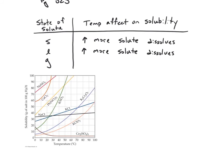Looking at a graph of solids dissolved versus temperature: as temperature increases along the horizontal axis, solubility in grams of salt per 100 grams of water increases for almost all of them. Some show exponential growth, others are more linear. Cesium sulfate is an unusual exception — its solubility actually decreases as temperature increases, which is difficult to explain. But all other solids on the table increase in solubility as temperature goes up.